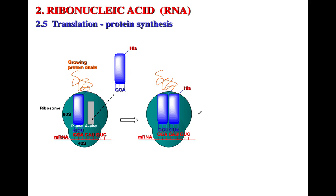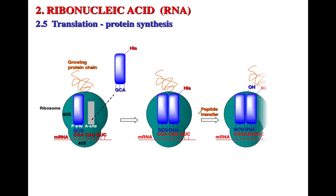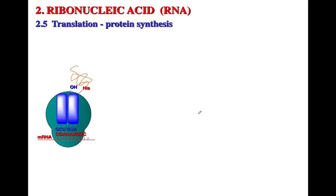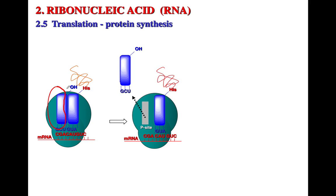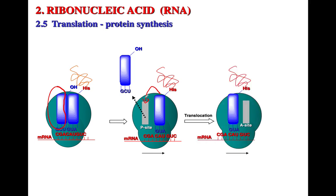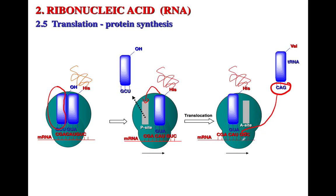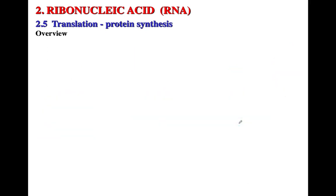Going through translation again: the histidine-containing tRNA comes in, peptide transfer takes place, and the tRNA that had the growing chain is removed from the P site. The new tRNA with the growing chain moves into the P site — translocation — opening the A site for the next transfer RNA to come in. That tRNA's codons hydrogen bond with the messenger RNA, and the reaction keeps going.